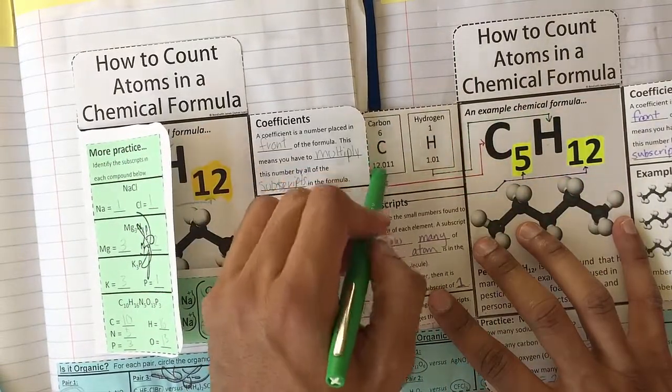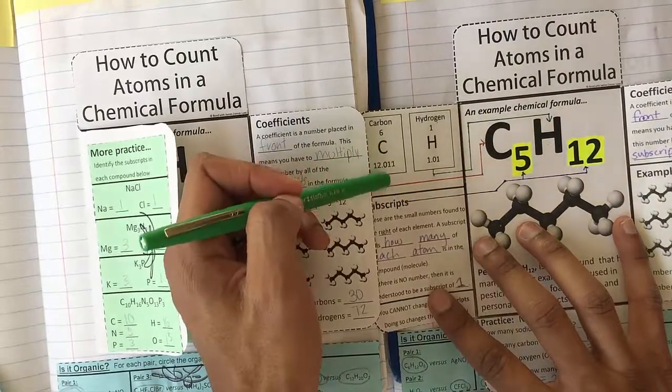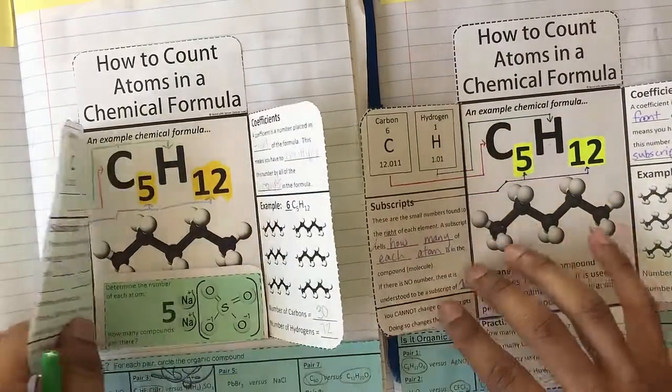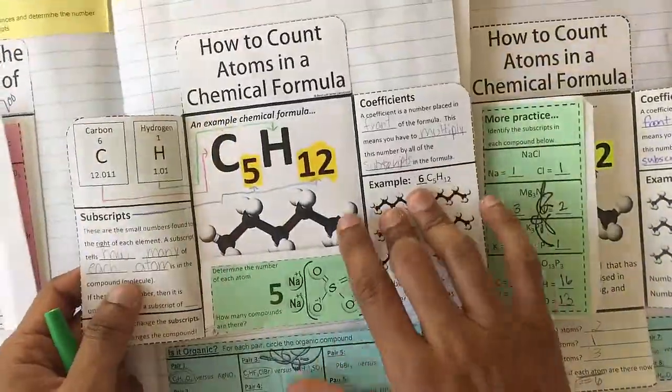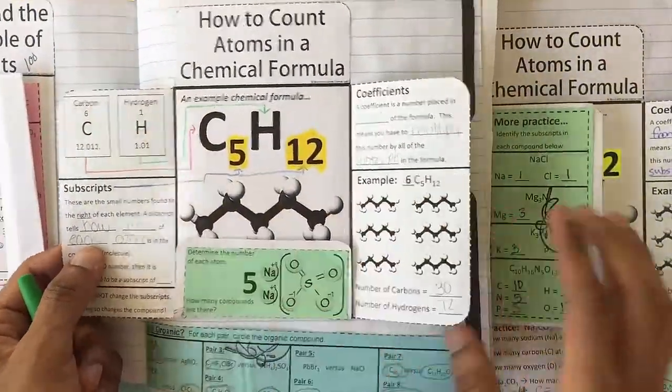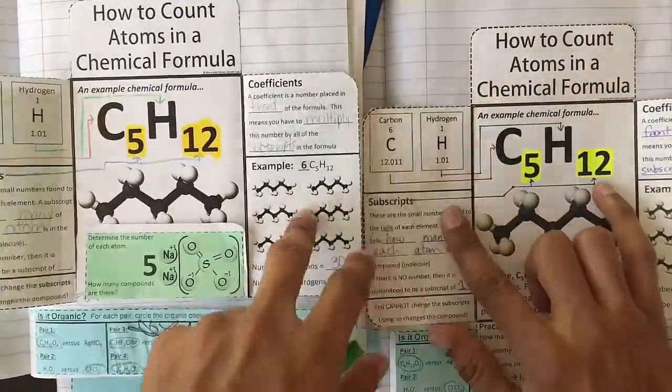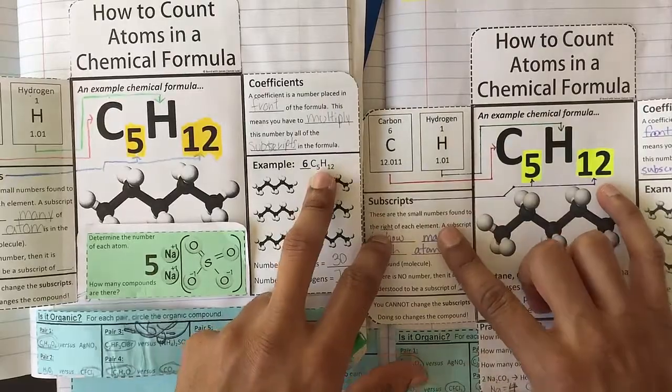So I have students draw a line from the symbol off the periodic table to the symbol in the chemical formula, which the students do here. You can see this is a student example. And then I have them highlight or box or circle the subscripts because that's what I begin to talk about next.